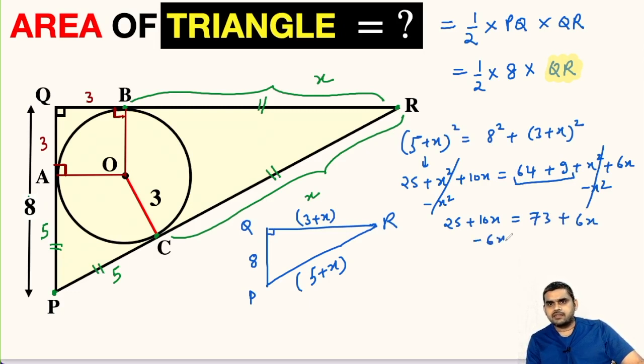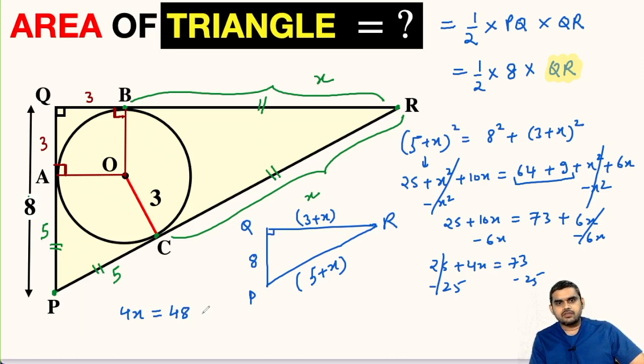Let us subtract 6x from both sides. So this will get cancelled. We will be left with 4x equals 73 minus 25, 48. So from here we get x equal to 48 by 4, that is 12.